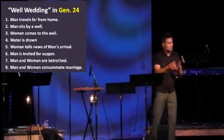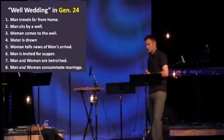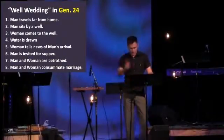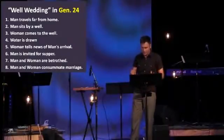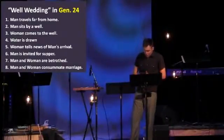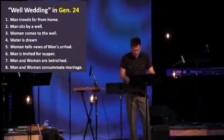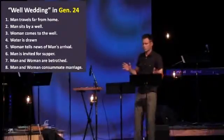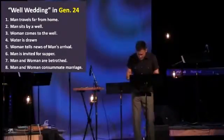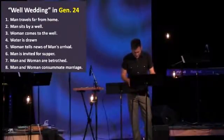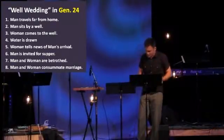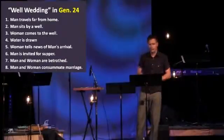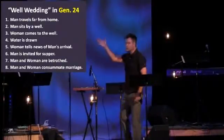We're ready for plot point three — a woman comes to the well — and as if on cue, verse 15: 'Before he had finished praying, Rebecca came out with her jar on her shoulder. The woman was very beautiful, a virgin; no man had ever slept with her. She went down to the spring, filled her jar, and came up again.' The servant hurried to meet her and said, 'Please give me a little water from your jar.' 'Drink, my lord,' she said, and quickly gave him a drink. After that she said, 'I'll draw water for your camels too, until they've had enough.' Plot point four — water is drawn.